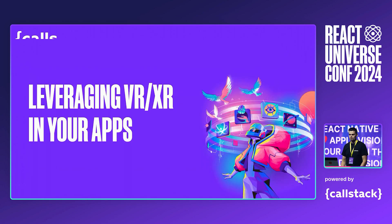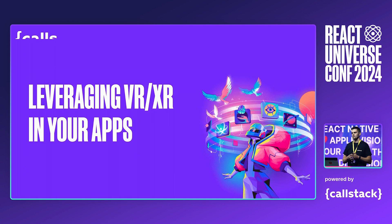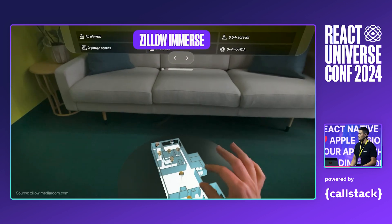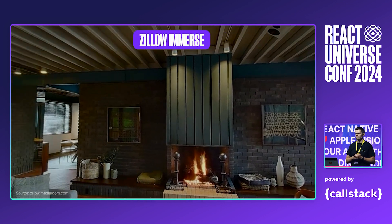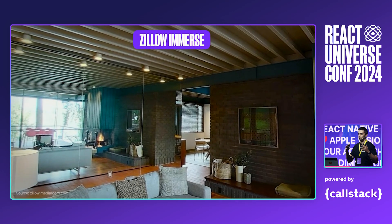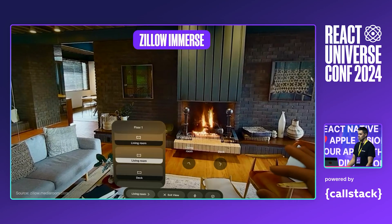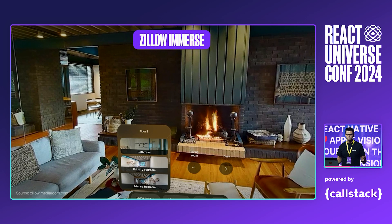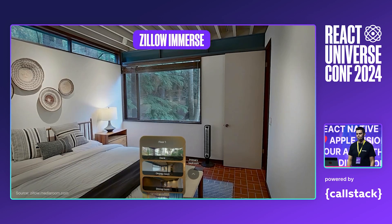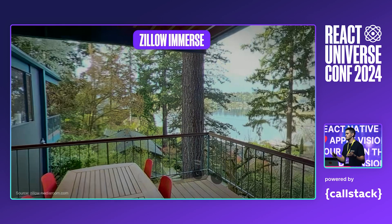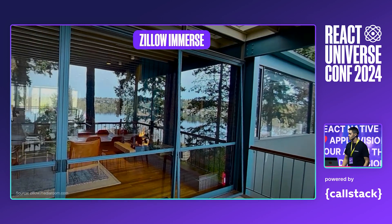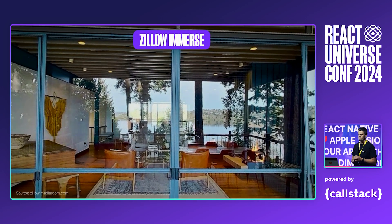Let's check out some cool examples of VR and XR apps that are already used in production, to give you an idea of what you can implement in your apps. First, we've got Zillow Immerse. Zillow is a real estate marketplace — they released an app that allows you to preview homes in 3D. They also use AI-generated floor plans to help guide you through the apartment. They combine the immersive experience with Windows UI to showcase more information. I think this is a really cool use case of the Apple Vision Pro.